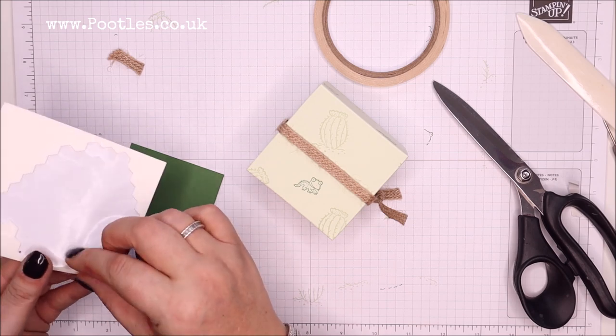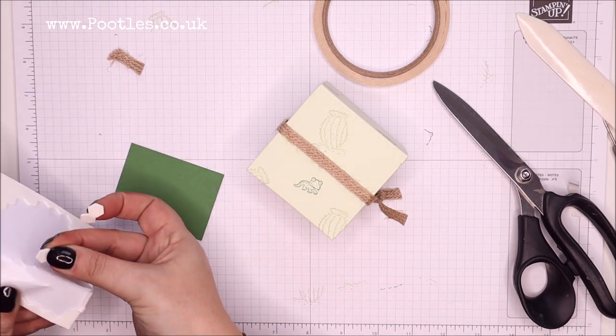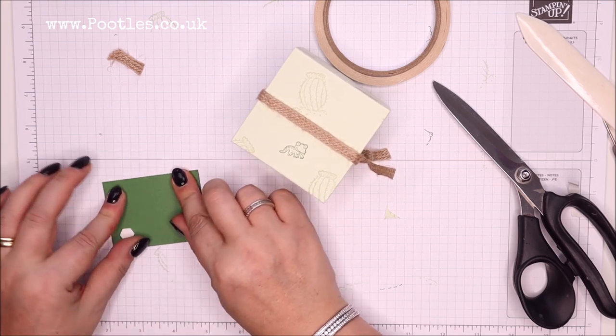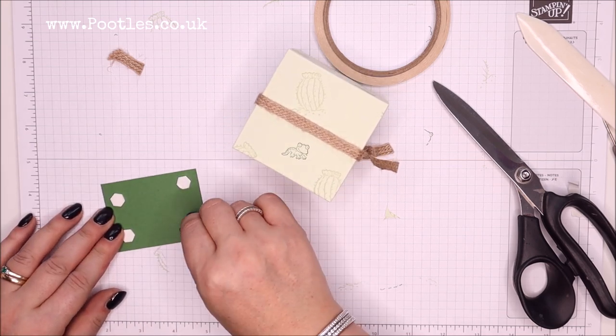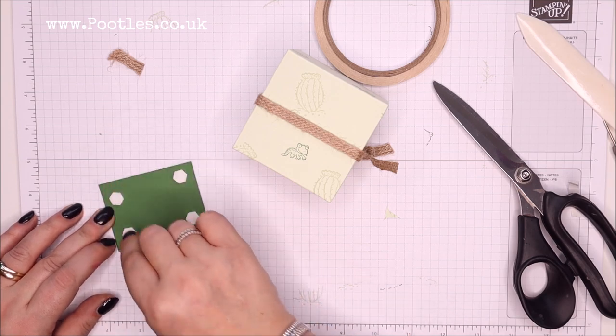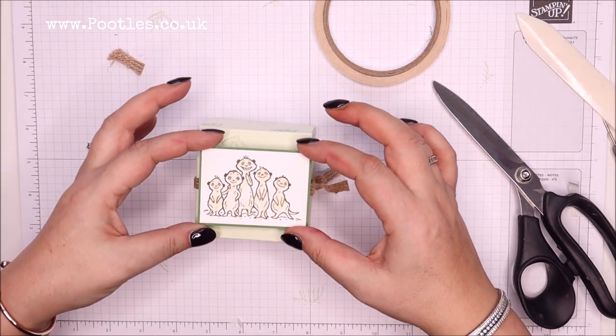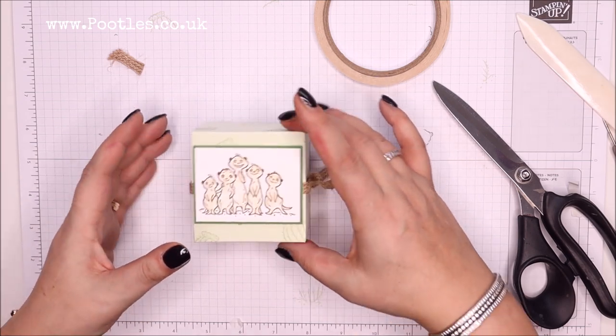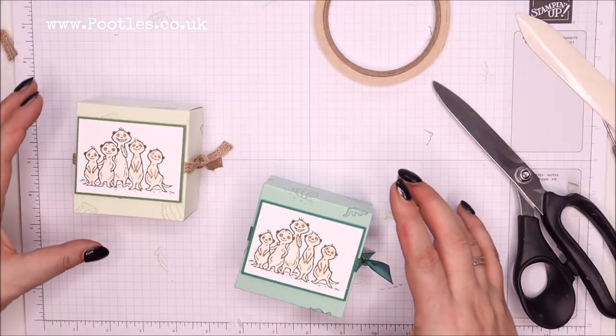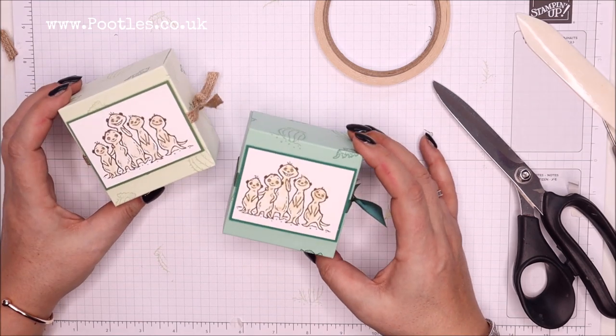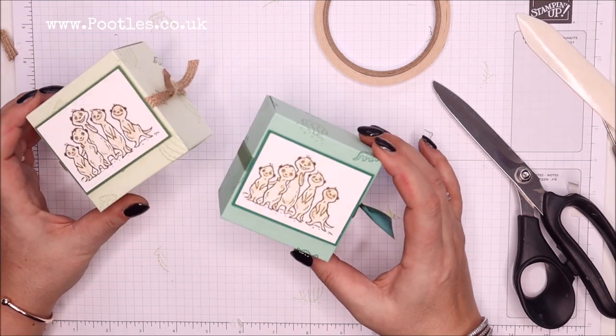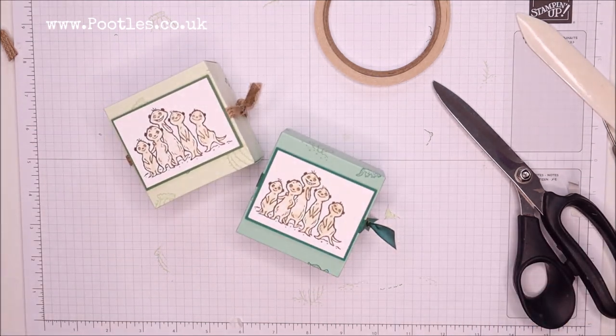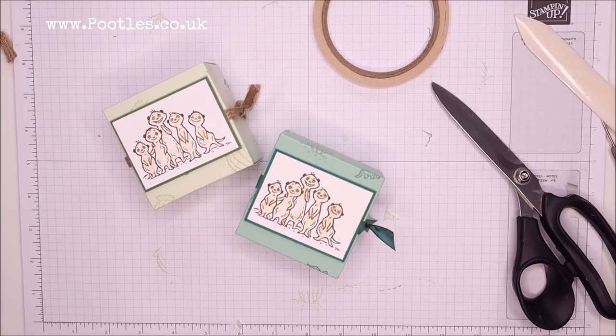And then I've just got to get my gang of meerkats on. So I'm going to use dimensionals in all four corners. And that means it will sit over the top of the twine. I love that. That is so much fun. My boys would be very happy if I gave them a gift in those. My husband would too. Hope you like them. Anyway, thank you so much for joining me. Hope to speak to you very soon. Bye.